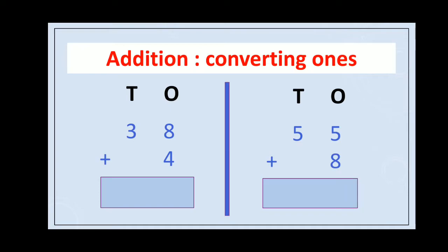Here is an example: 38 plus 4. We add ones first. 8 plus 4 is equal to 12, which means 1 ten and 2 ones. So we write 2 in the ones column and carry 1 ten to the tens column. Now add tens: 3 plus 1 is equal to 4. The answer is 42.